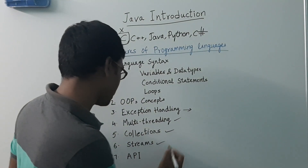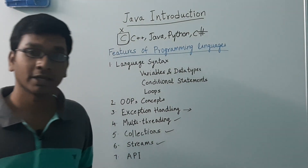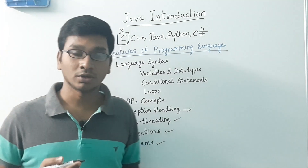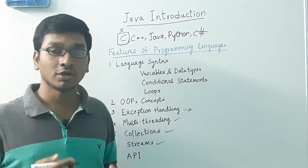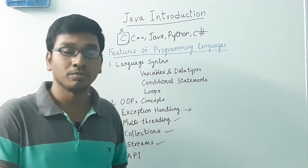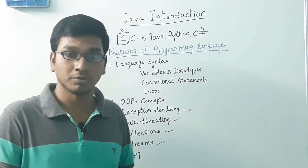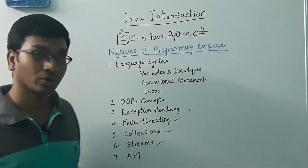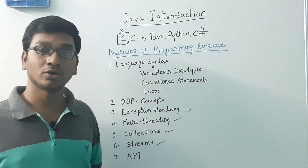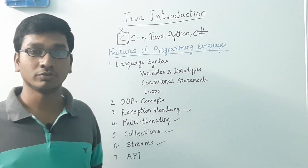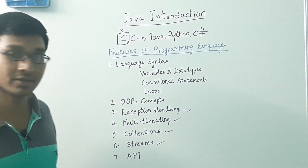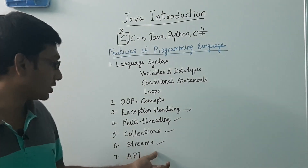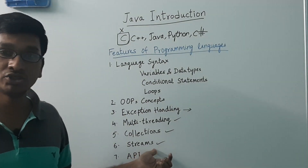Next comes streams. Streams are like when we want to read an input and write an output to some output device. All these come under streams. So anything related to input and output, we usually call it IO operations. All that comes under streams.